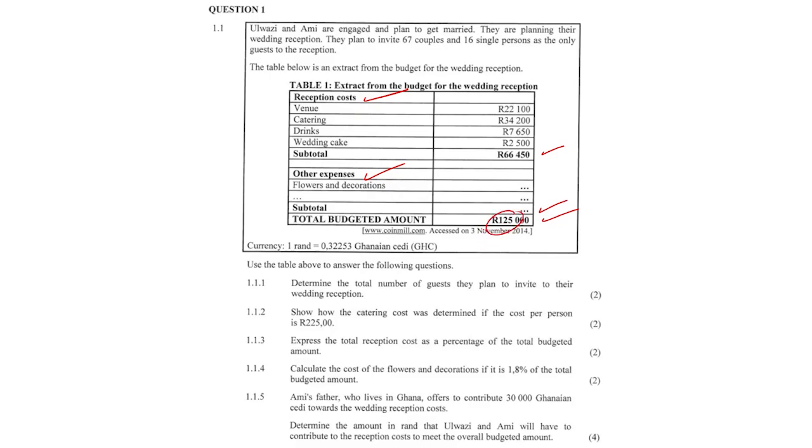Use the table below to answer the following questions. Question 1.1.1: Determine the total number of guests they plan to invite to their wedding reception. It's going to be 67 couples, so a couple is 2, times 67 times 2 plus 16. Remember we always deal with the multiplication sign first, 67 times 2, then we add 16. 150 is going to be our answer.